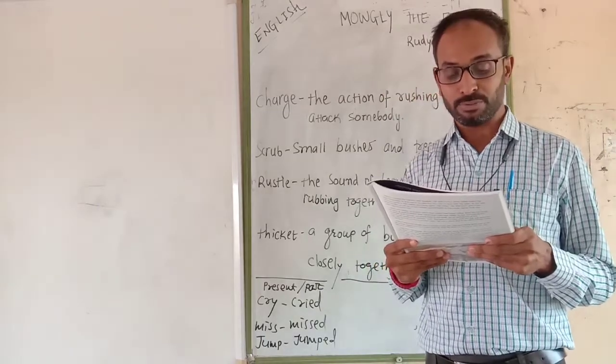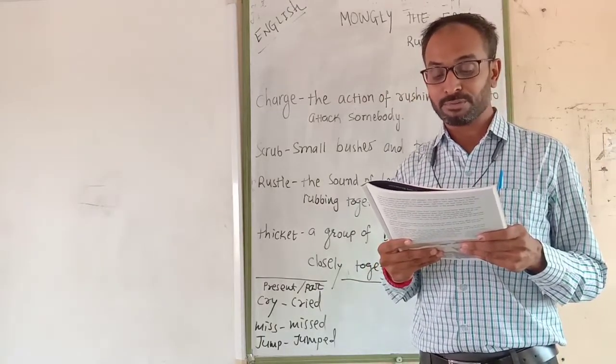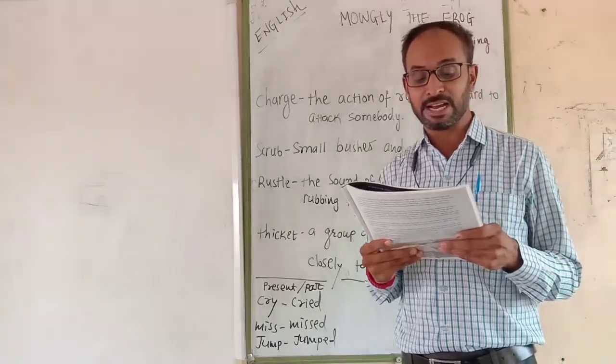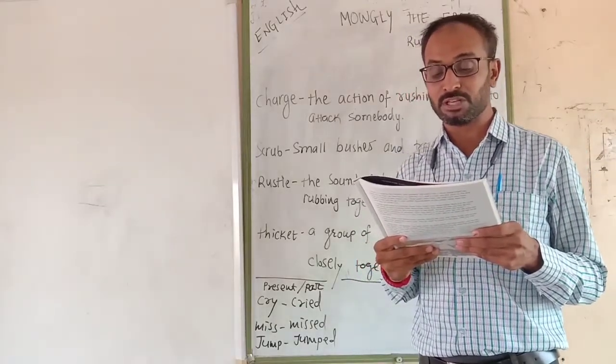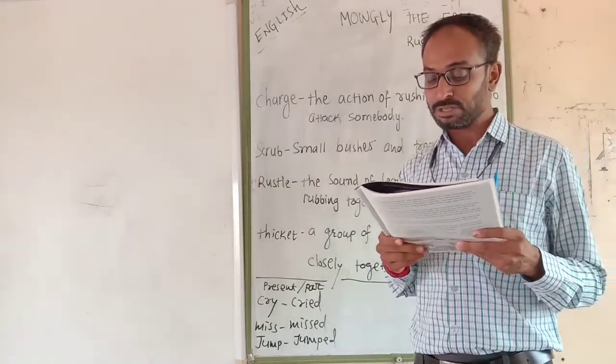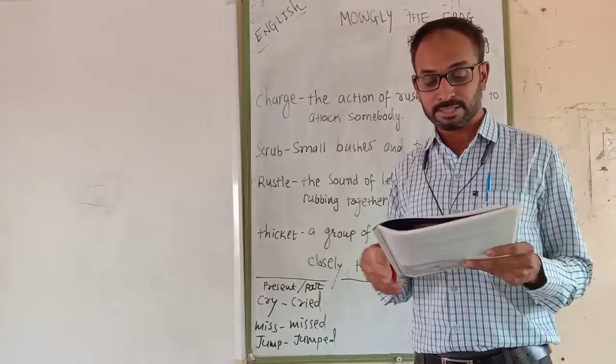The moonlight was blocked out of the mouth of the cave, for Shere Khan's great square head and shoulders were thrust into the entrance. Here thrust means to push suddenly.